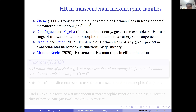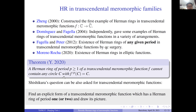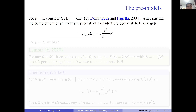Recently, Monique proved the existence of Herman rings in any entire function — a very special class of meromorphic functions. Similar to the rational case, a Herman ring of period at least two of a transcendental meromorphic function cannot contain any periodic circles in the Herman ring. So the same question arises for transcendental meromorphic functions.